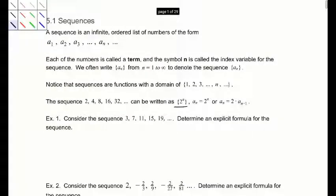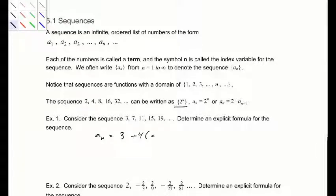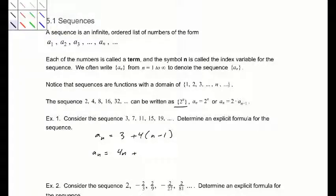Let's look at the sequence 3, 7, 11, 15, 19. Write an explicit formula for this sequence. So a sub n equals 3 plus 4 times (n minus 1). Plugging in n equals 1 gives 3, which is our first term. Plugging in n equals 2 gives 7 — the (n minus 1) takes into account that we are starting at 1. Rearranging, that is 4n minus 1, which is the explicit formula.